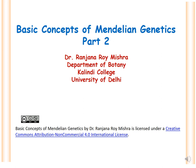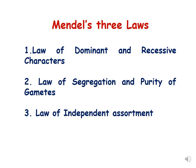Hello students, welcome. Let us discuss part 2 of basic concepts of Mendelian genetics. In the previous lecture, we discussed some basic terms used in Mendelian genetics, the history of Mendelism, and the success behind Mendel. In this lecture, we will be discussing laws formulated by Mendel based on the results of his experiments. Mendel formulated 3 laws: the law of dominant and recessive characters, the law of segregation and purity of gametes, and the law of independent assortment.